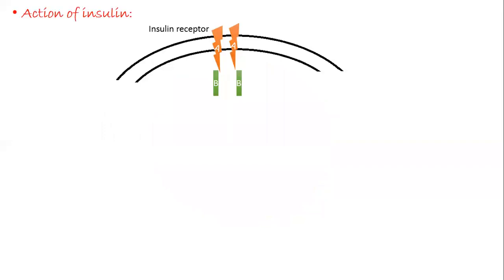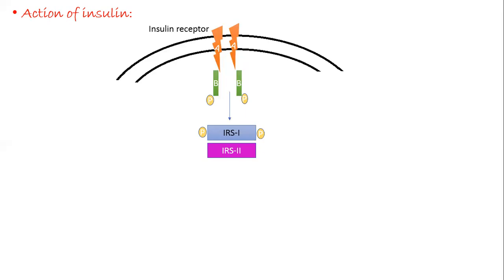Now we'll see the action of insulin. On all cells there is an insulin receptor with tyrosine kinase activity, made up of four units: two alpha units and two beta units. Once insulin is taken up by this receptor, the receptor itself undergoes phosphorylation, stimulating a cascade of other reactions. It phosphorylates insulin receptor substrate 1 (IRS-1), which phosphorylates IRS-2, then IRS-3, and then IRS-4.